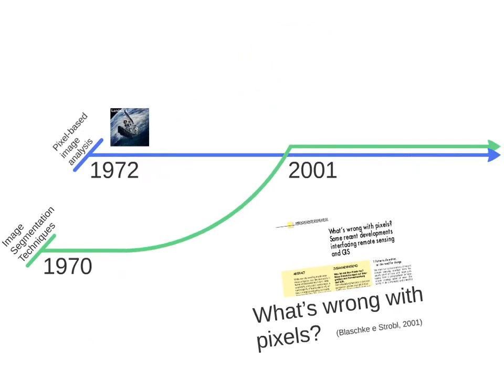In 2001, there is a very important paper called 'What's Wrong With Pixels,' which investigates how to merge both of these techniques in order to produce better results in remote sensing. Not just these two techniques, but also the knowledge of the user, the domain specialist. When we gather these techniques and the knowledge, we can make better classification of remote sensing images. We can say that in 2001, it's like the beginning of the GEOBIA paradigm.